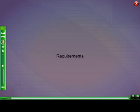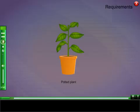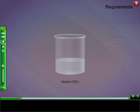Requirements: Potted plant, Petri dish, boiling tube, alcohol 70%, iodine solution.